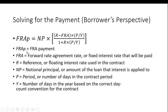In the formula: FRAP is the forward rate agreement payment; FRA is the forward rate agreement rate, or the fixed interest rate to be paid; R is the reference rate or floating interest rate used in the contract; NP is the notional principal — some amount such as a million or ten million dollars; P is the number of days in the contract period; and Y is the number of days in the year based on the correct day count convention for the contract.